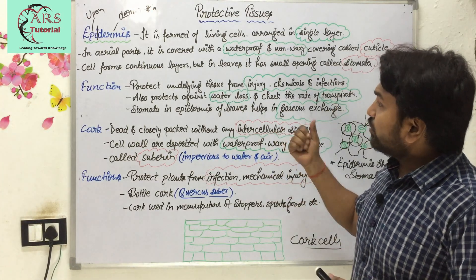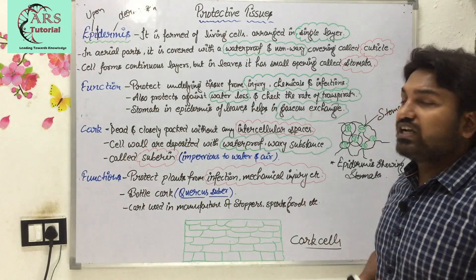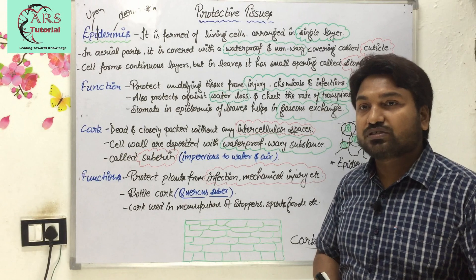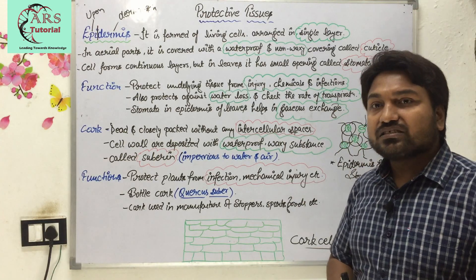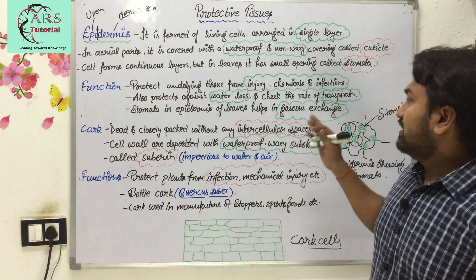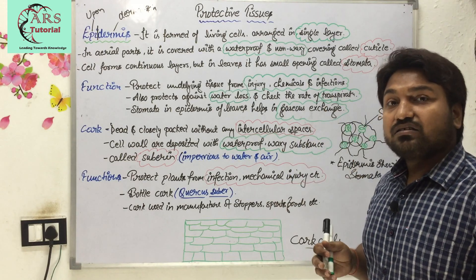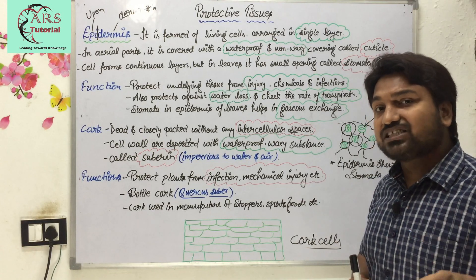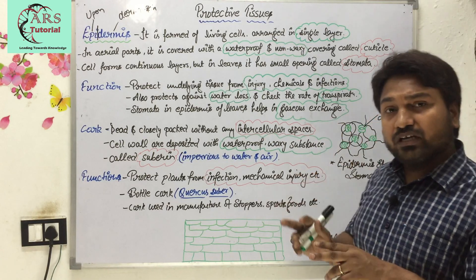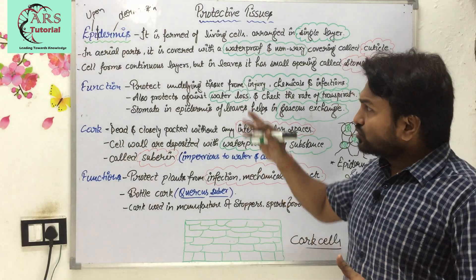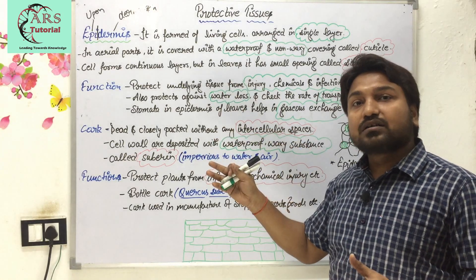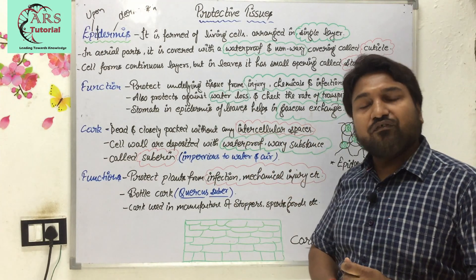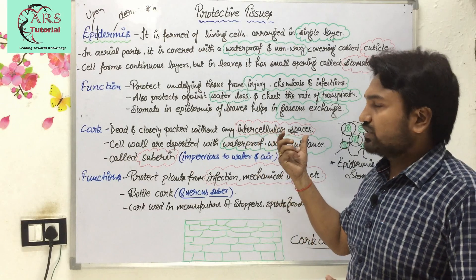Epidermis protects plants against water loss and checks transpiration. Stomata in the epidermis of leaves helps in gaseous exchange during transpiration and photosynthesis. During photosynthesis and transpiration the rate of loss of water is maximum, and the epidermis protects the plant from this loss of water.